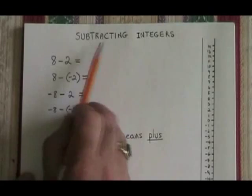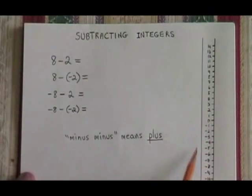When we subtract integers, our number line turned on its side, our thermometer, is useful again.